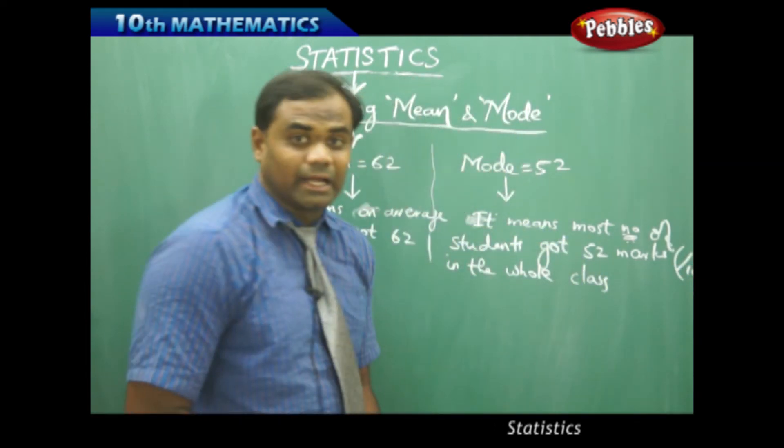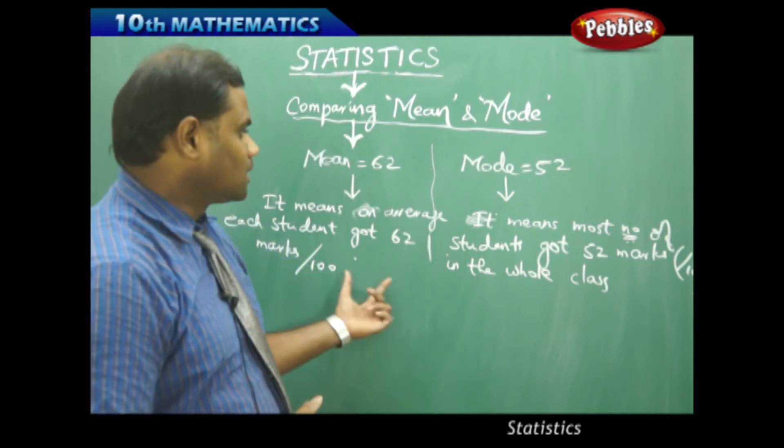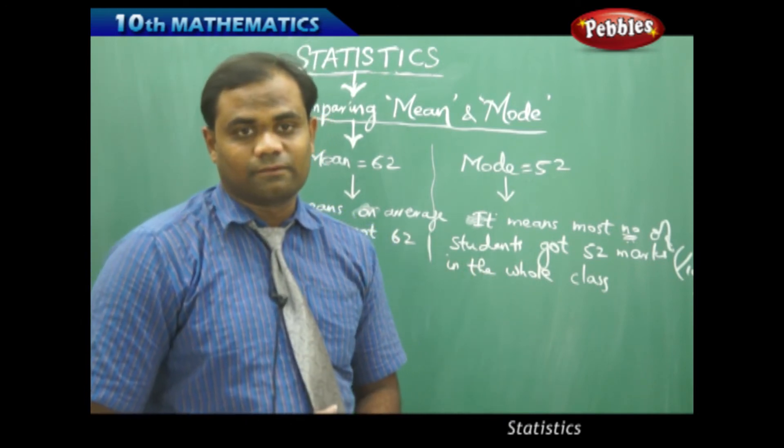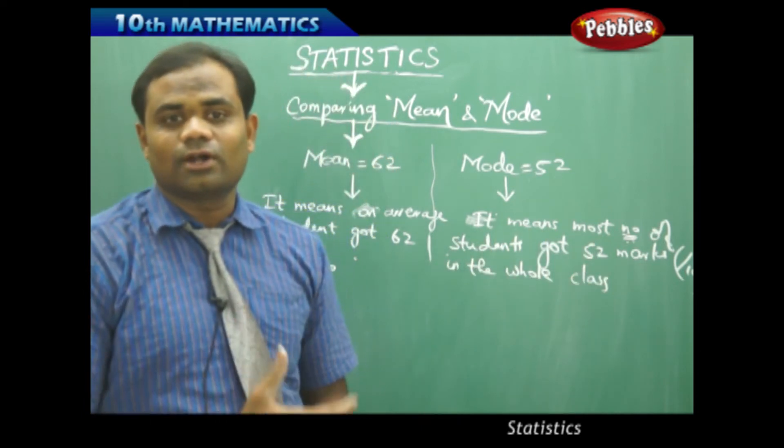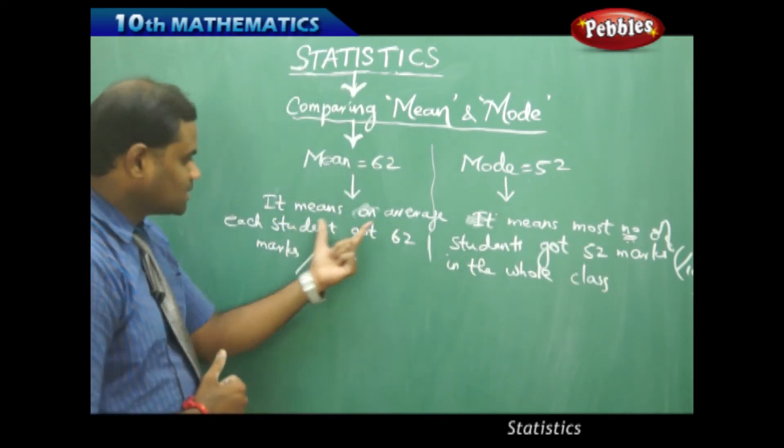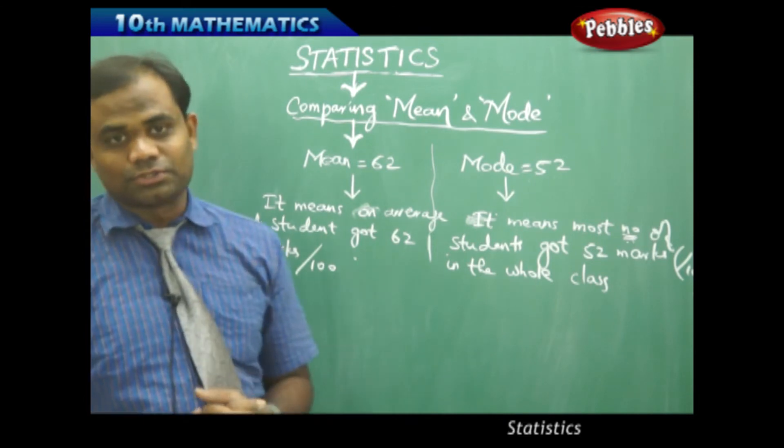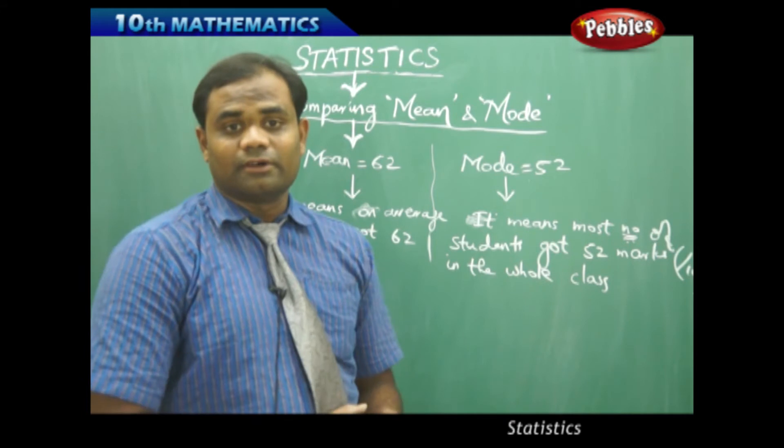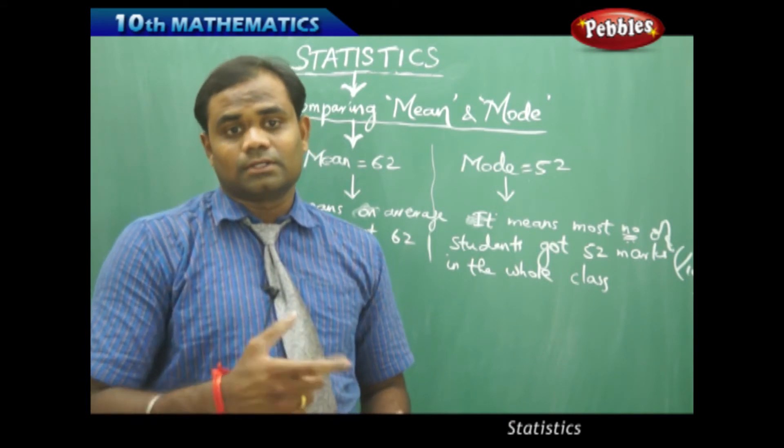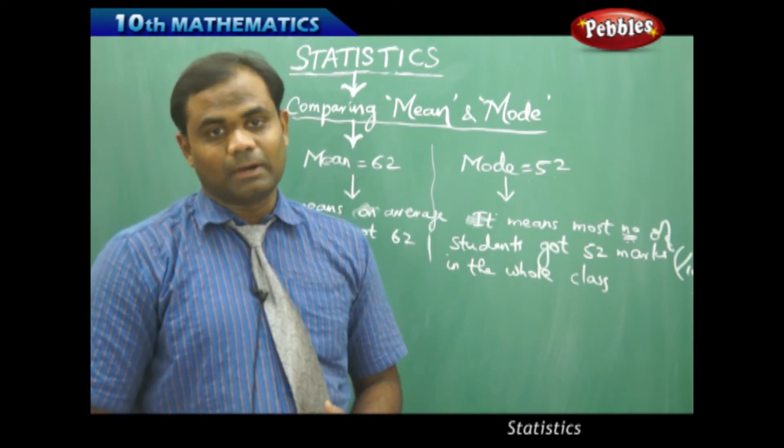This is how I understand the mode and mean compared and connected to real life. So when I come to mode, it means the most number of students who got 52 marks. Mean is on average, each student got 62 marks. So mean refers to the average and mode refers to the most number of times or most occurring part.